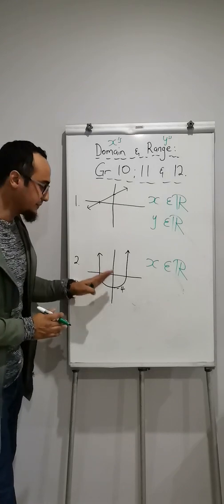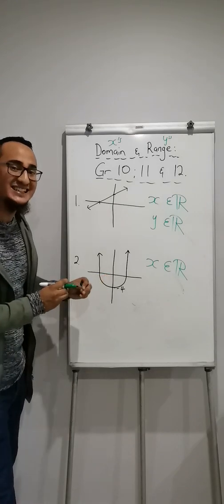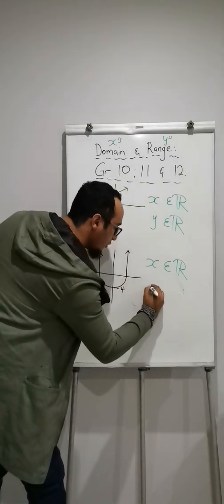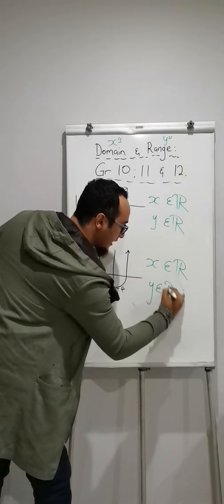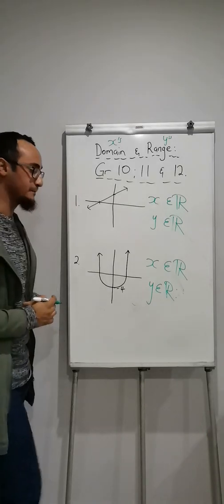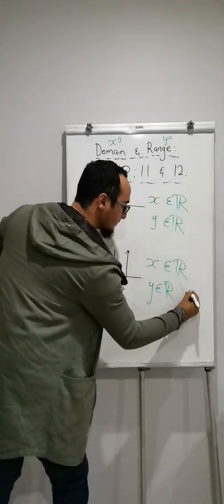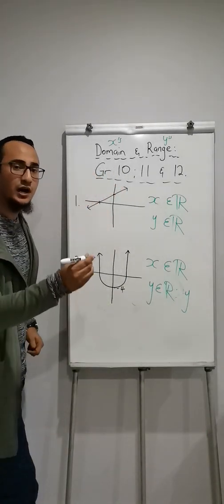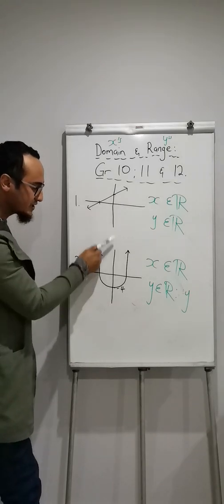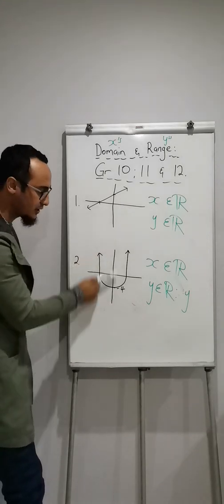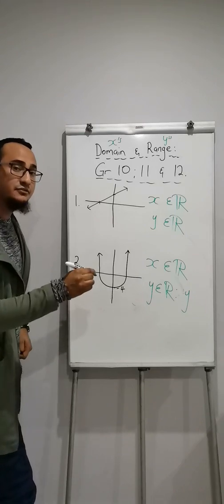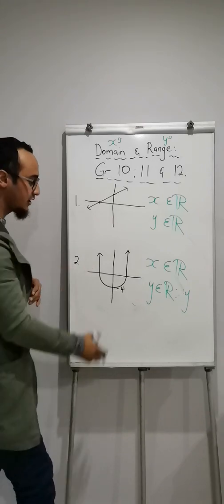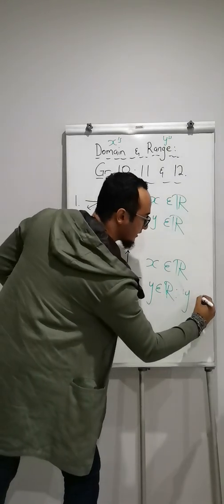Now here it becomes a little bit tricky because now I have a restriction. Firstly, y is an element of real numbers. Then I have a restriction over here. So range is to do with y, right? When I think of y, I look at my y-axis. What's the only number that I see on my y-axis? And that number is negative 4. The negative 4 is also known as my y-intercept. So I'm going to put negative 4 over here. Now I have my restriction.